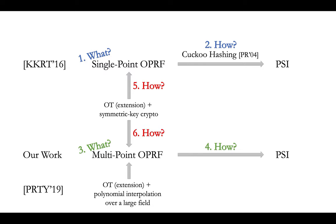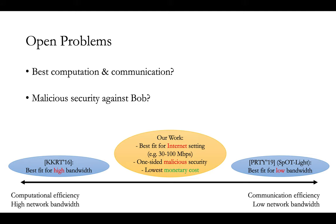To summarize, we construct a new PSI protocol from multi-point OPRF to get rid of the usage of Cuckoo hashing, so we can reduce the communication from Alice to Bob. And since we can construct multi-point OPRF from OT extension and symmetric key cryptographic operations only, our computation is also very efficient. Finally, to mention a couple of open problems: our PSI protocol is somewhere between KKRT and PRTY, so an interesting question would be can we achieve the best of both worlds — the best computation as well as the best communication? And the second question is, our protocol can achieve malicious security against Alice almost for free — can we achieve malicious security against Bob without much loss in efficiency?